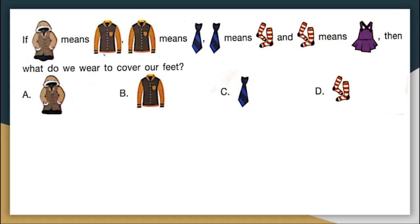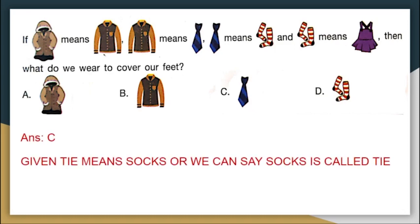One thing you have to keep in mind in such questions is the way you read the question. Do not read it like 'if jacket means two shirts.' Remember there is a comma here — look at all the punctuations, it is very important. You should give a pause: 'If jacket means shirt, [comma] shirt means tie, [comma] tie means socks.' Read it like that with that pause, then only you will be able to get the correct answer. Here socks is called tie, so what do we wear to cover our feet? We cover our feet with tie. Correct answer is option C.